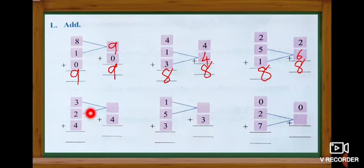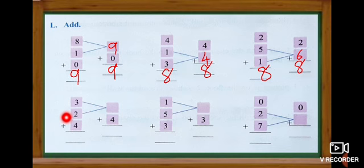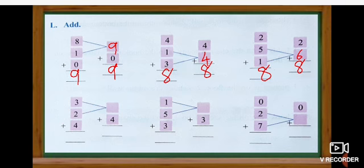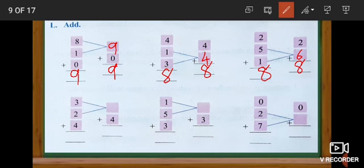Look at the next sum. Here they tell us to add three plus two first. Three in the mind and two in the fingers. After three: four, five. We get five. So we write five here. And the next number is four — now we are going to add five plus four. Five in the mind and four in the finger. After five: six, seven, eight, nine. The answer is nine.